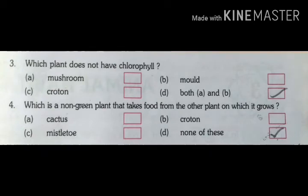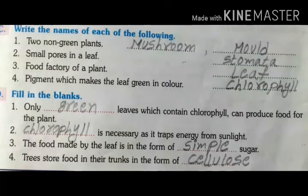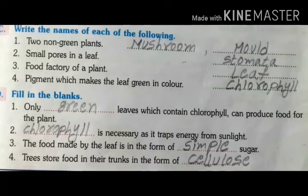Next, write the names for each of the following. Two non-green plants: mushroom and mould. Small pores in a leaf: stomata. Food factory of a plant: leaf. Pigment which makes the leaf green in color: chlorophyll.